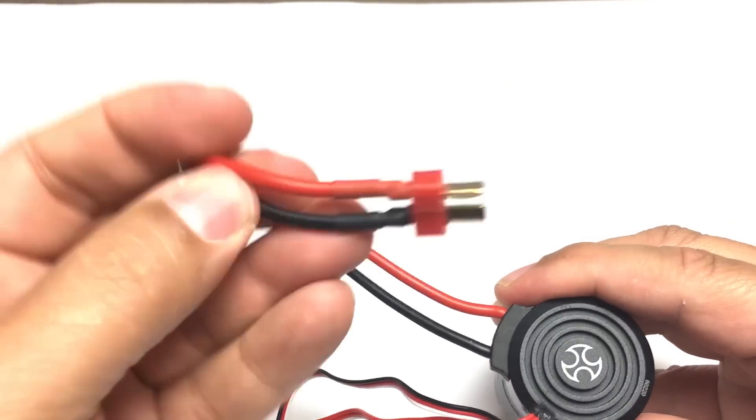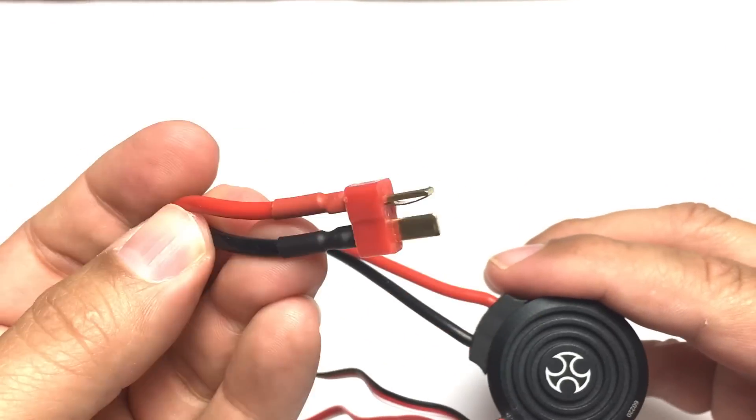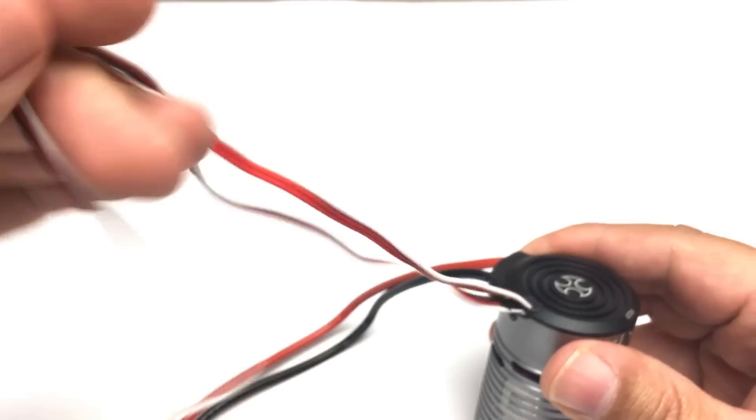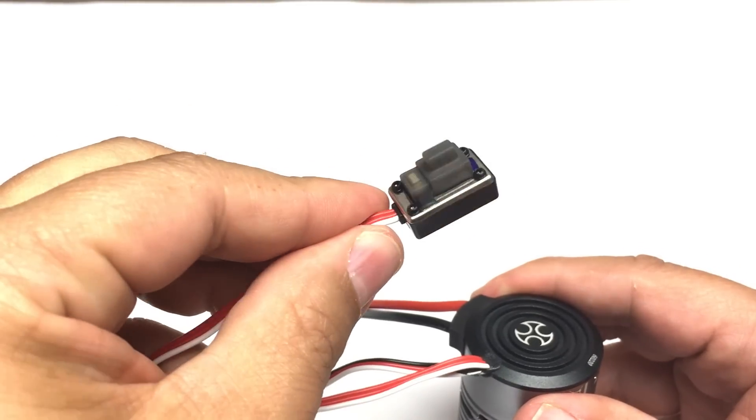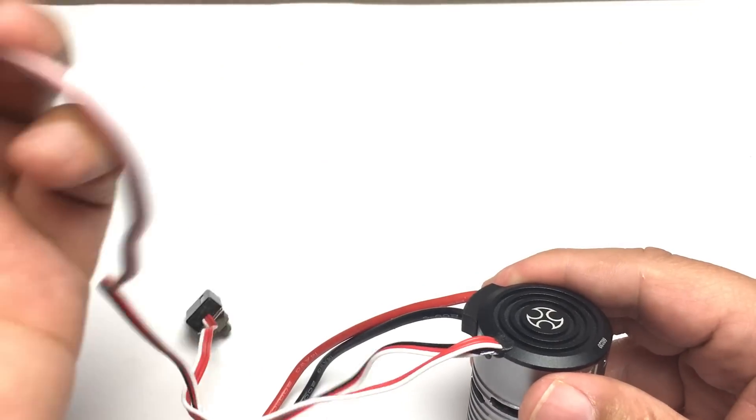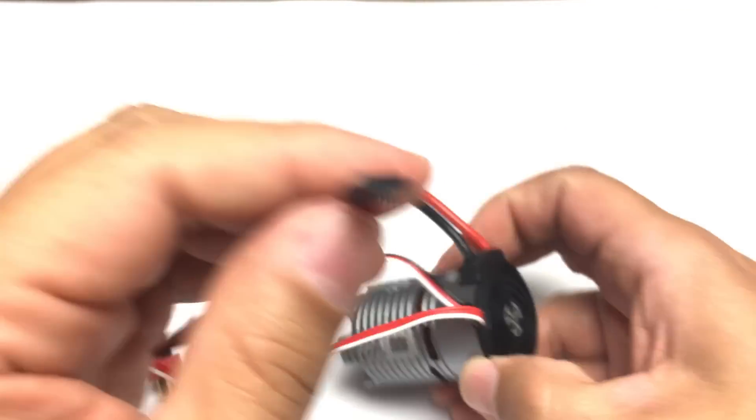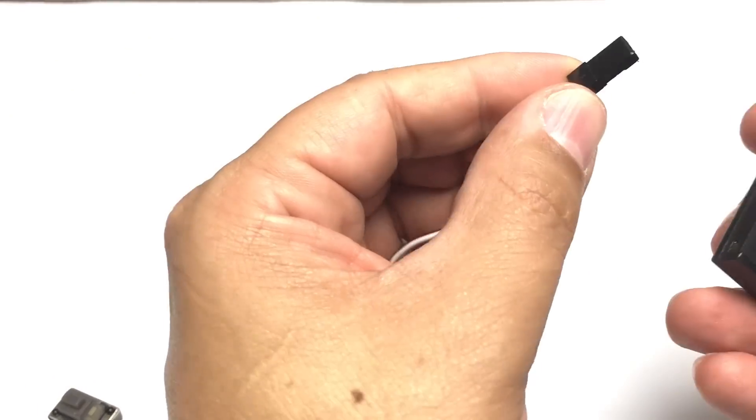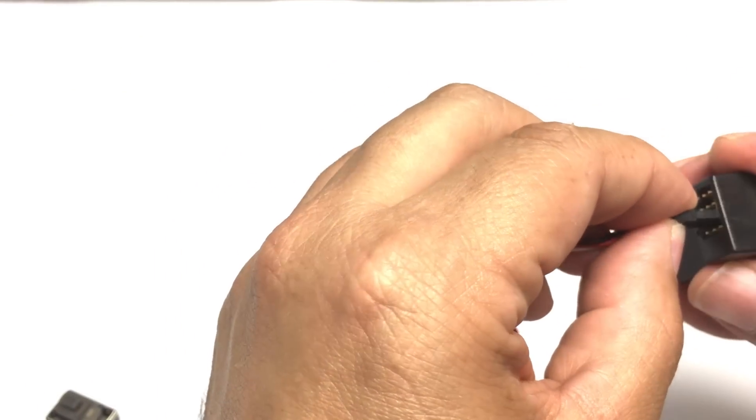And then we've got our on-off switch with a programming button and your standard receiver plug. I've actually already set this one up so we should be able to plug it in and fire it up easily. I'll go ahead and put a pinion on here so we can see the spinning action.